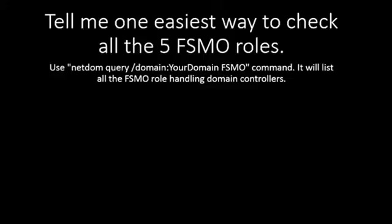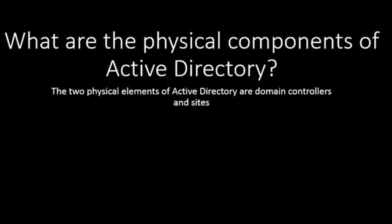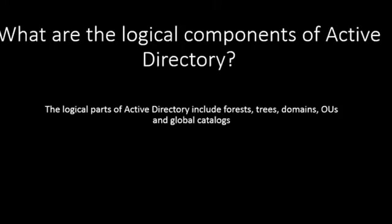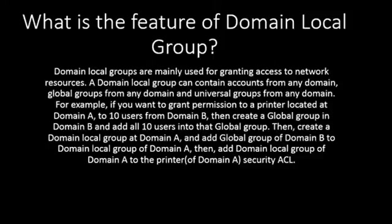To check all five FSMO roles, you can use the command: netdom query /domain:yourdomain fsmo. This command will list all the FSMO role-holding domain controllers. The two physical components of Active Directory are domain controllers and sites. The logical components of Active Directory include forests, trees, domains, OUs, and global catalog.